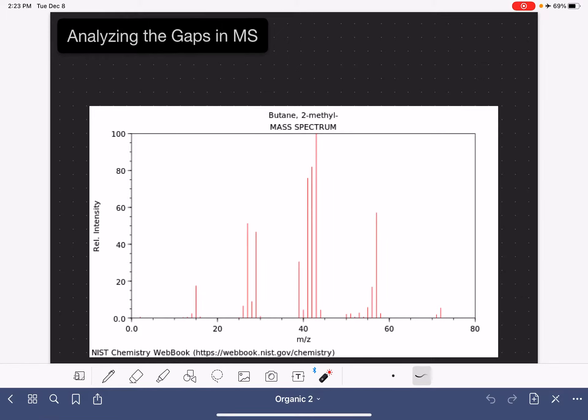When we're analyzing a mass spec, the most important thing is that we pay attention to the M plus peak as well as an M plus 2 peak if it's present.